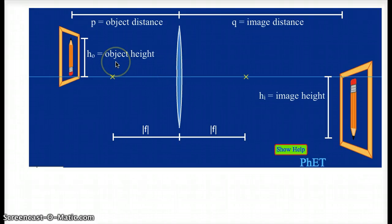We can also label an object height and an image height, h_o and h_i, and both of those are measured from the optical axis, this horizontal blue line through the center of the lens, from the optical axis to the edge of the object or the image.